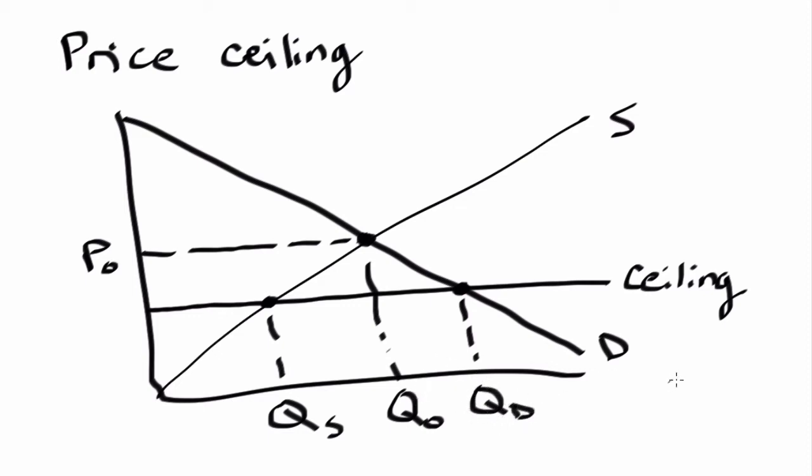So in this case, as we can see, the quantity demanded by consumers is greater than the quantity supplied by producers. And this intuitively makes sense, because the price ceiling is a price control that's aimed to protect consumers. And therefore, consumers are going to demand more of this since the overall price that they're paying is lower than the original equilibrium price.